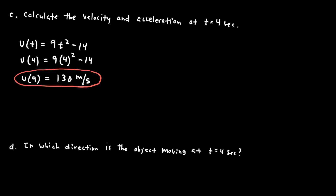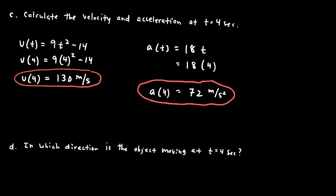For the acceleration at t equals 4, using the equation a equals 18t: 18 multiplied by 4 gives 72. Acceleration is a change in velocity with time, so the units are meters per second per second, or meters per second squared. The acceleration at t equals 4 is 72 meters per second squared. To find velocity or acceleration at any particular moment, determine the equations first, then plug in the specific time.